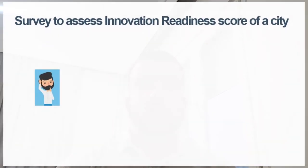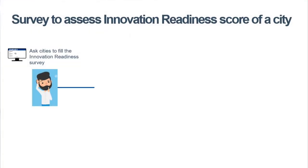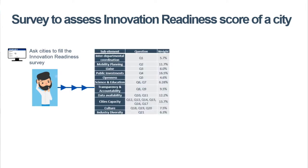This slide visualizes the methodology that was followed to calculate the score of each city. At first, a city can answer up to 21 questions. Then the score of each question is multiplied with the question's weight.